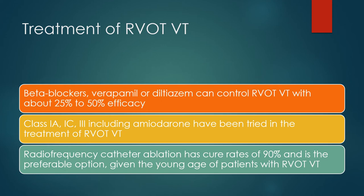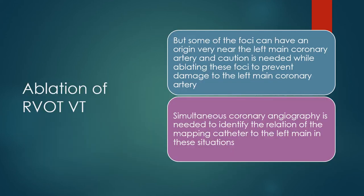Class 1A, 1C, and class 3 drugs including amiodarone have been tried in the treatment of RVOT VT. Radiofrequency catheter ablation has cure rates of 90% and is the preferable option given the young age of patients with RVOT VT. Some foci can have an origin very near the left main coronary artery, so caution is needed while ablating to prevent damage. Simultaneous coronary angiography is needed to identify the relation of the mapping catheter to the left main in these situations.